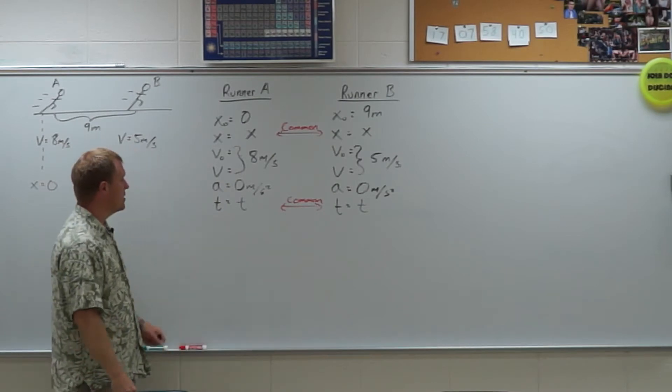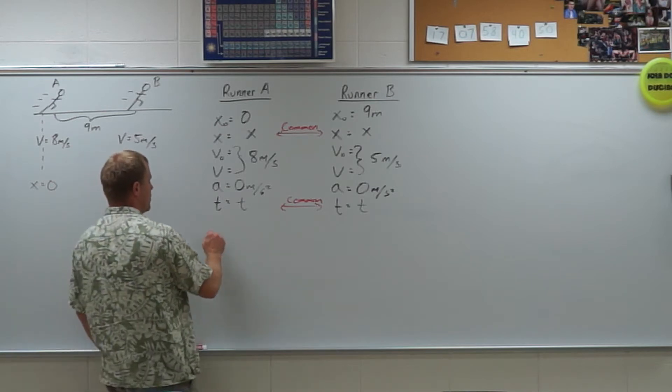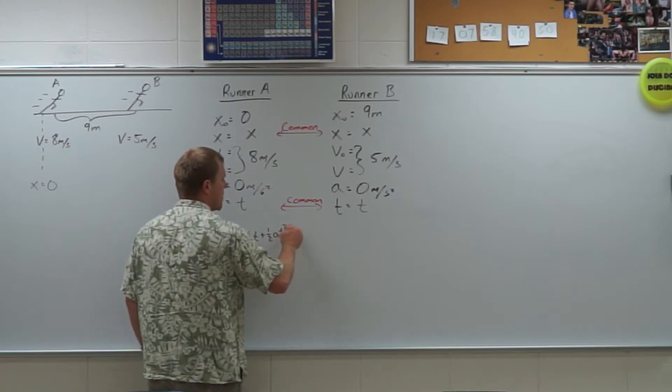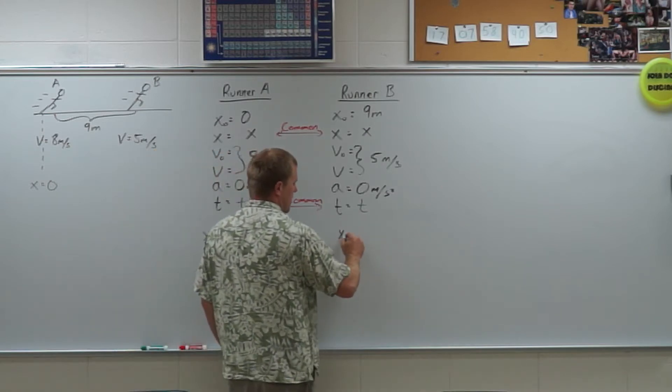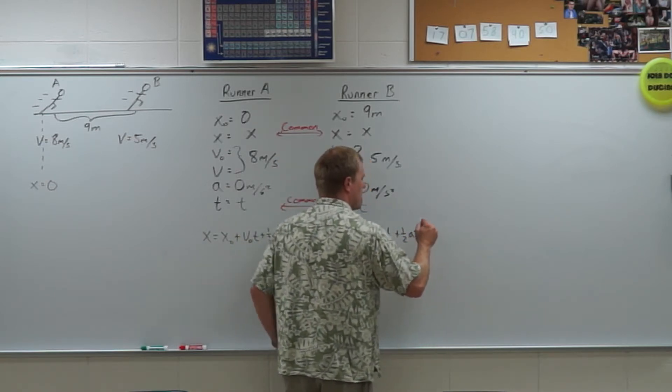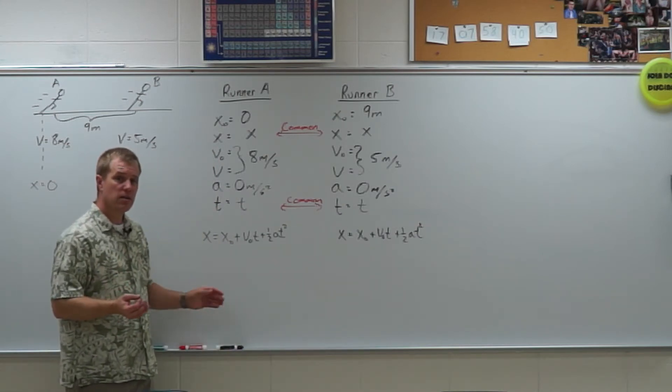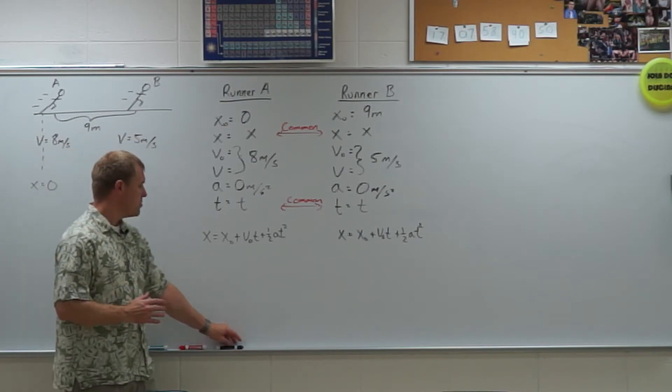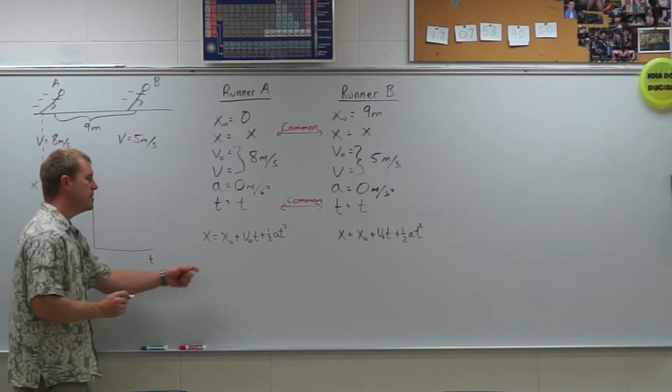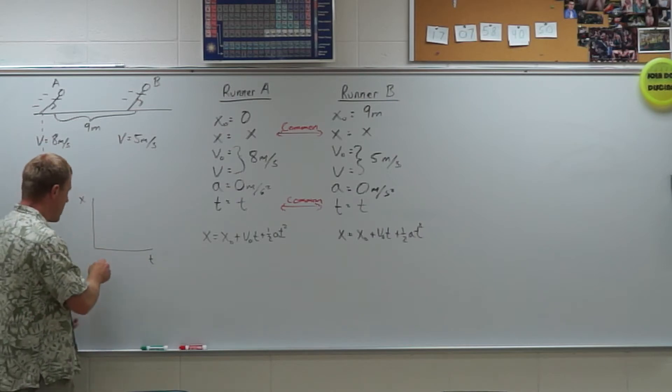So you might remember from our constant velocity one that acceleration is zero. That means we're using equation number two. And so I have x is equal to x₀ plus v₀t plus ½at squared. Same over here. So I have x is equal to x₀ plus v₀t plus ½at squared. Now this is a pretty common equation to use in simultaneous problems because when we looked at those graphs of position versus time, this is the equation we were looking at that was being graphed.